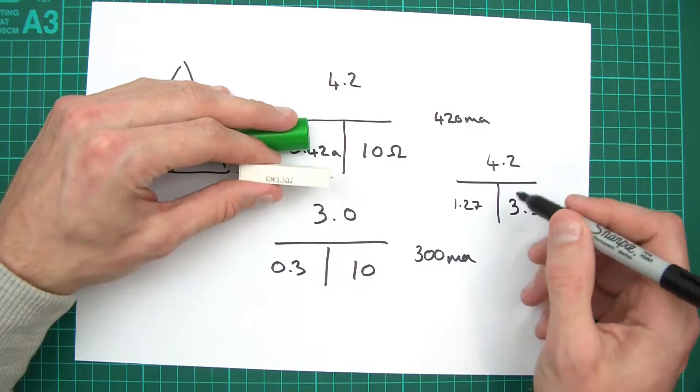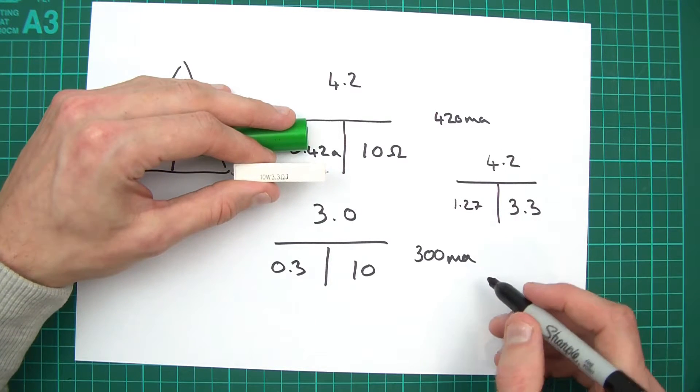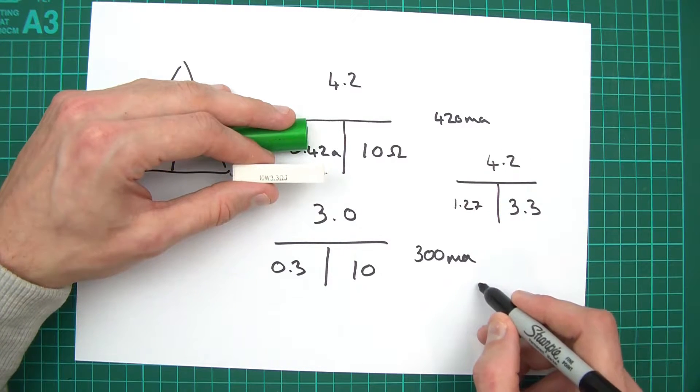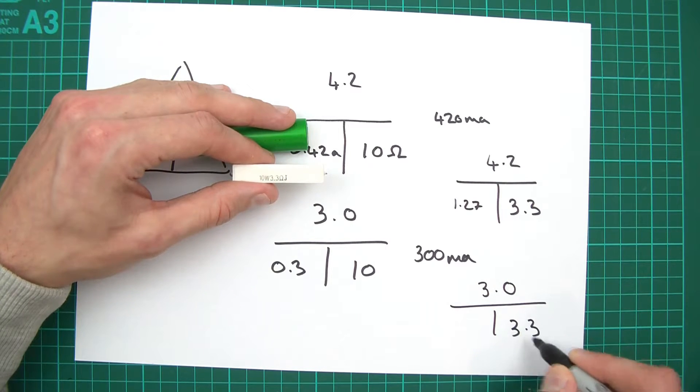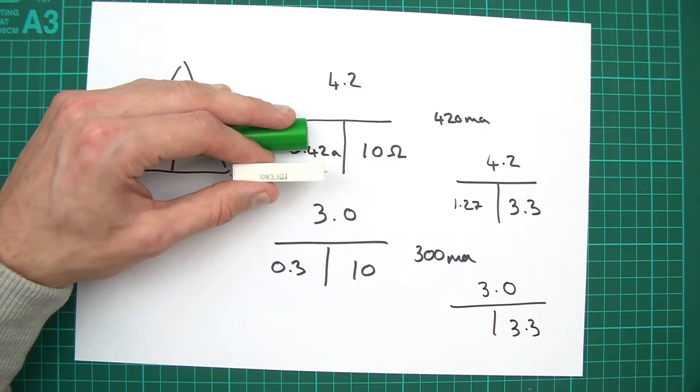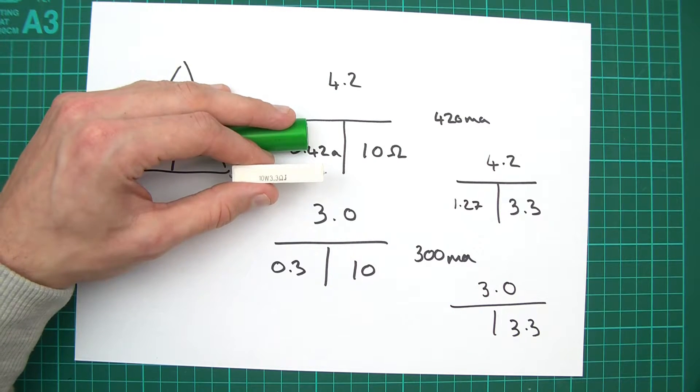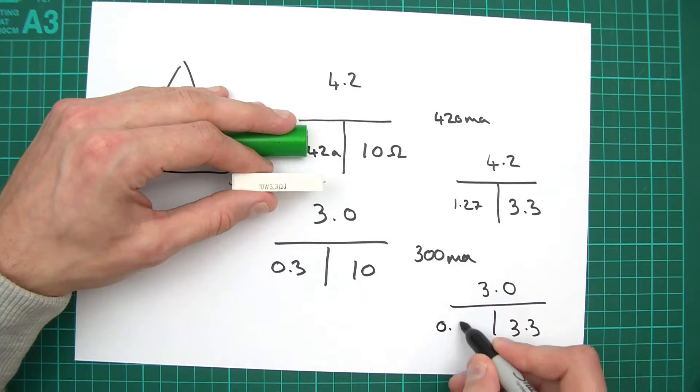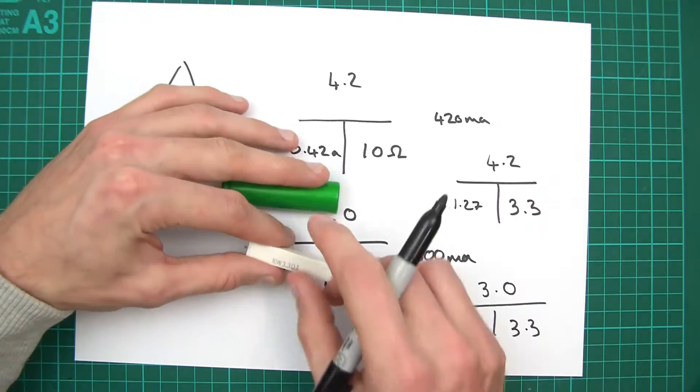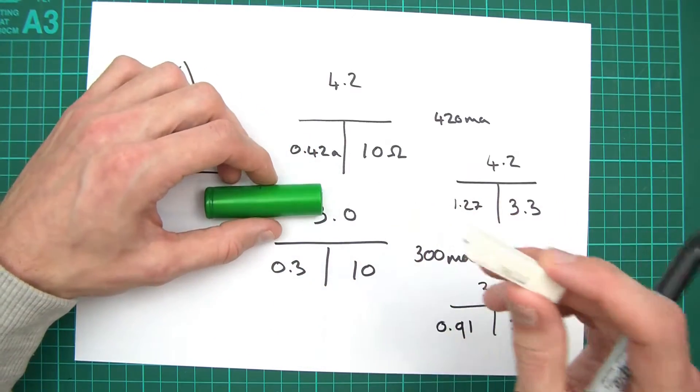And let's see how much current it would allow to pass through when it's discharged. 3.0 volts divided by 3.3, and I think that's going to be 0.9 or something, but let's see. 3 divided by 3.3, yeah, 0.91. 0.91 amps. So it looks like this resistor is ideal.